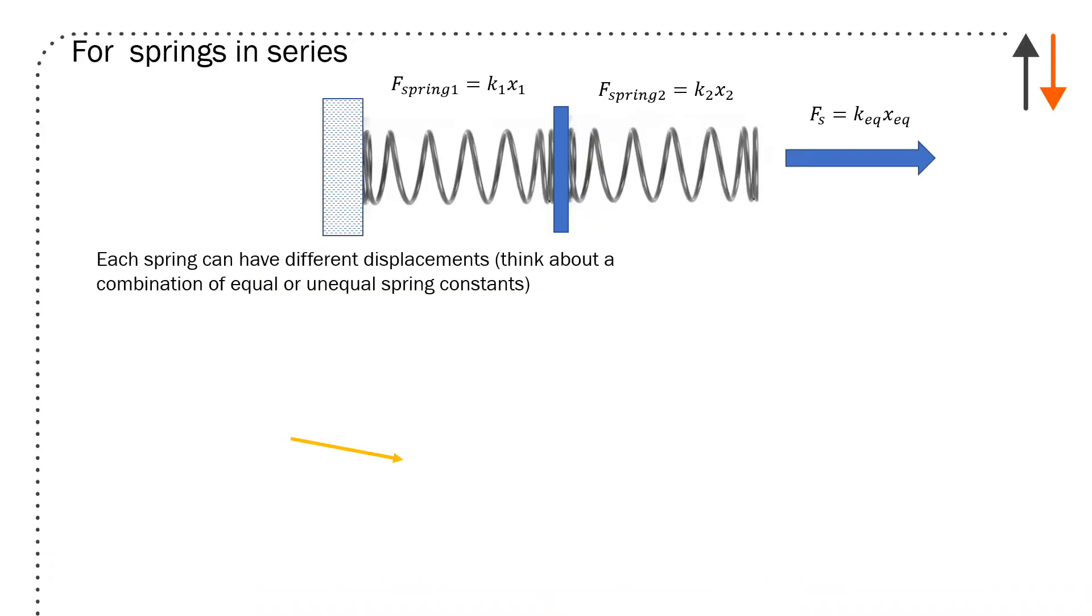Here I have springs in series. I have spring one which is over here, I have spring two which is over here, and that spring is now being stretched by an equivalent spring k_equivalent and x_equivalent. In order for that spring to remain in equilibrium, I need to be able to have the same force attached at the other end, which means that if I cut it anywhere...